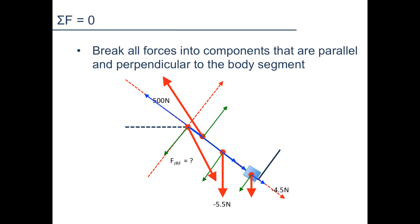Once you break all forces into two components, we can sum all the forces that are perpendicular to the leg, and we can also sum all the forces that are parallel to the leg. The sums of all forces in each direction should add up to zero. Using this logic, we can find out the magnitude of the joint reaction force. Let's now look at each force separately.